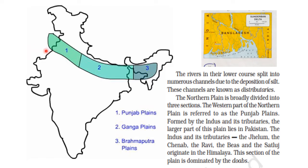First we will see the divisions. The northern plain is broadly divided into three sections. The western part of the northern plain is referred to as the Punjab plains, which is formed by the river Indus and its tributaries. The larger part of the Indus lies in Pakistan, but all its major tributaries originate from the Himalayas and form the western part of India.